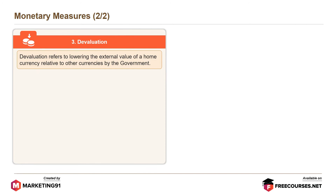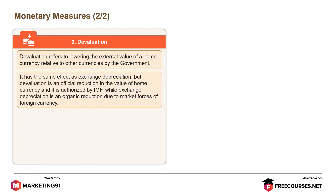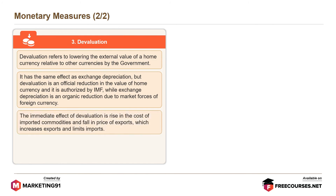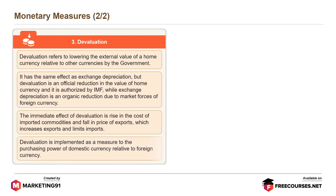Devaluation refers to lowering the external value of a home currency relative to other currencies by the government. It has the same effect as exchange depreciation, but devaluation is an official reduction in the value of the home currency authorized by the IMF, while exchange depreciation is an organic reduction due to market forces. The immediate effect of devaluation is a rise in the cost of imported commodities and a fall in the price of exports, which decreases imports and is implemented to reduce the purchasing power of domestic currency relative to foreign currency.